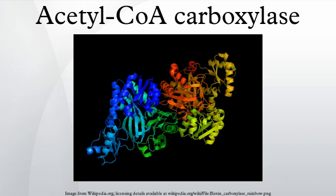In mammals, where two isoforms of ACC are expressed, the main structural difference between these isoforms is the extended ACC2 N-terminus containing a mitochondria targeting sequence.